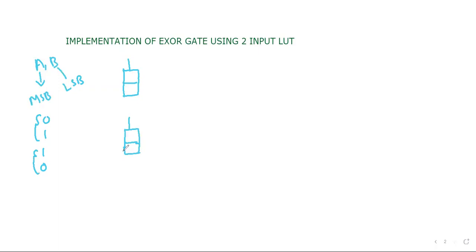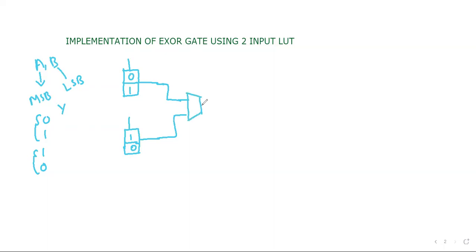So I am taking two two-input LUTs. In the first one I will store 0, 1 and in the second one I will store 1, 0. We need to combine these outputs — we have two outputs but actually we need only one output Y. We can combine them with the help of a 2-to-1 multiplexer, so that at a time only one output is there. For the multiplexer we also need a selection line. For each LUT, the LSB (B) will be given as the selection input, and the MSB (A) will be given to the multiplexer.